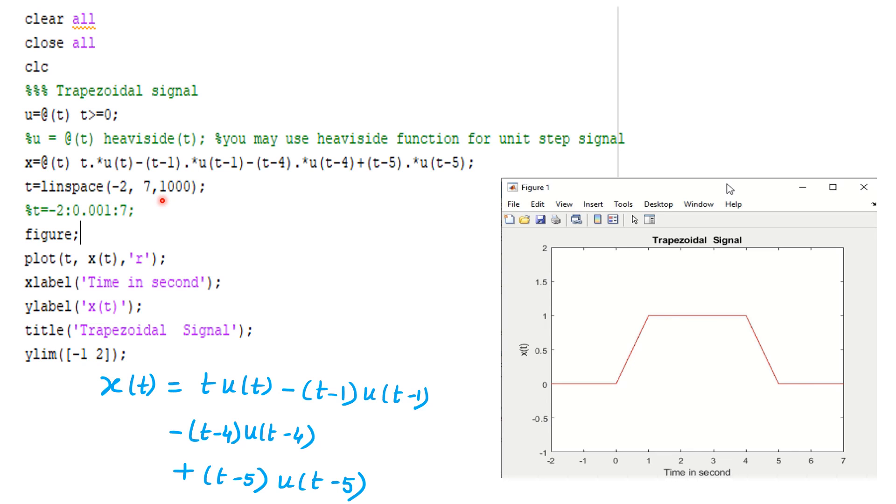Or simply you can write t = -2:0.001:7, and you can put the increment 0.001. So in this way we can also define our time range, time vector t.